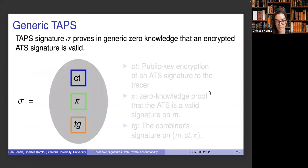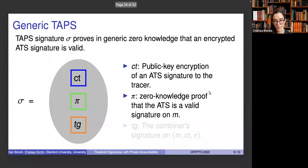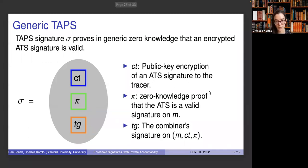We then give a generic TAPS, which proves in generic zero-knowledge that an encrypted ATS signature is valid. This signature includes a ciphertext, which is the encryption of an ATS signature to the tracer or designated entity. It includes a zero-knowledge proof that the ATS is valid, and it includes a signature that it was issued by the combiner.